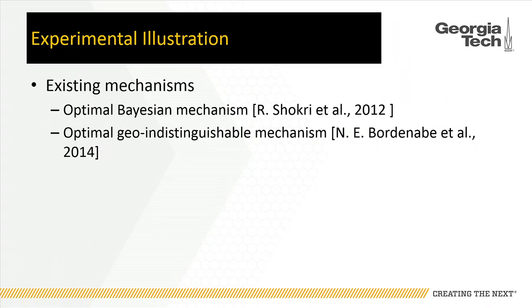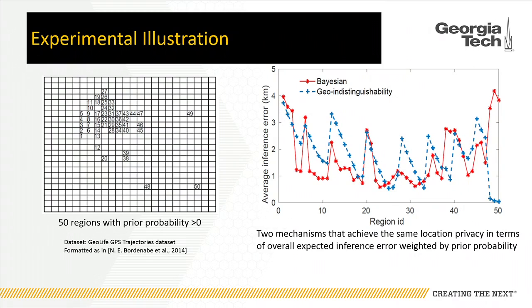In our paper, we study two typical mechanisms using these two different privacy notions: the optimal Bayesian mechanism and the geo-indistinguishability mechanism. We consider a user with a location trace over 50 regions and build a prior probability over these regions. We simulate the user running both mechanisms over 50 regions, simulate adversary attacks, and measure the average inference error over each region. We find that in isolated regions, geo-indistinguishability can have very low inference error for the adversary.